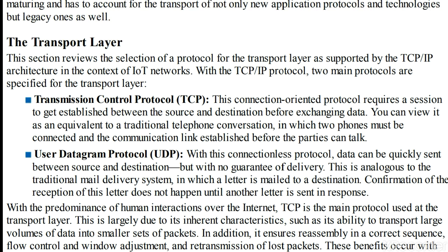UDP is a connectionless protocol where data can be quickly sent between source and destination, but with no guarantee of delivery. The data will be sent quickly, but there is no guarantee of delivery. They have given an example of a traditional mail delivery system where the letter is sent to the destination, but confirmation is guaranteed only when another letter is sent in response.